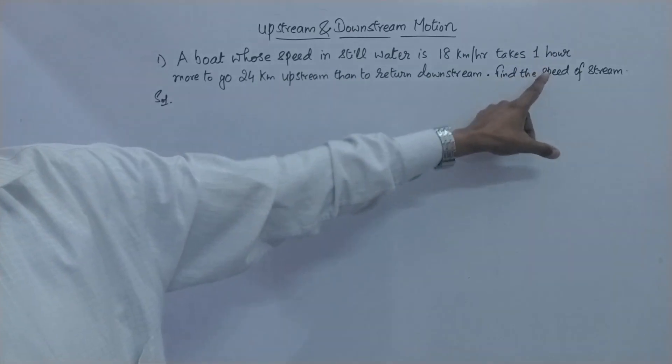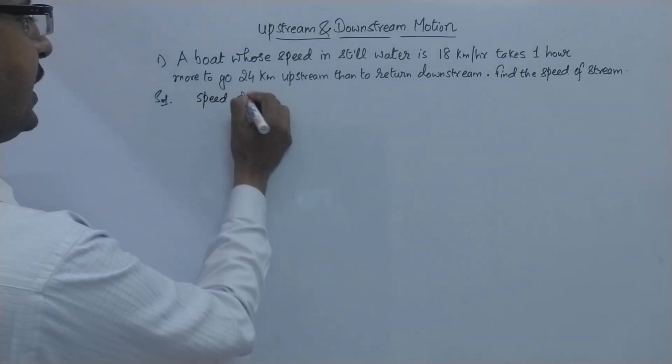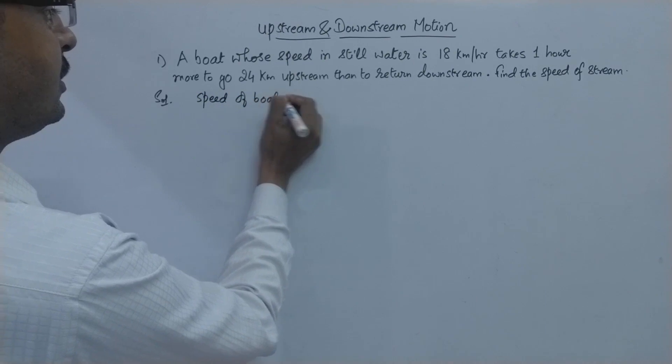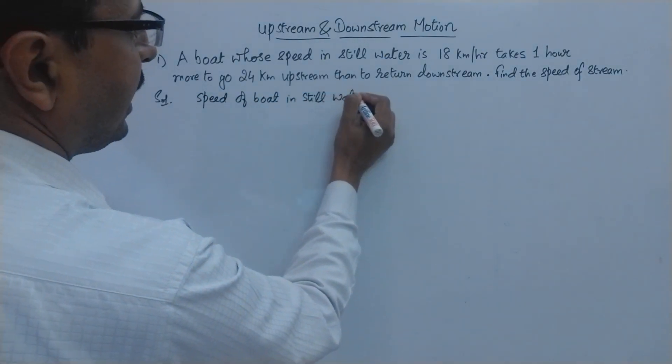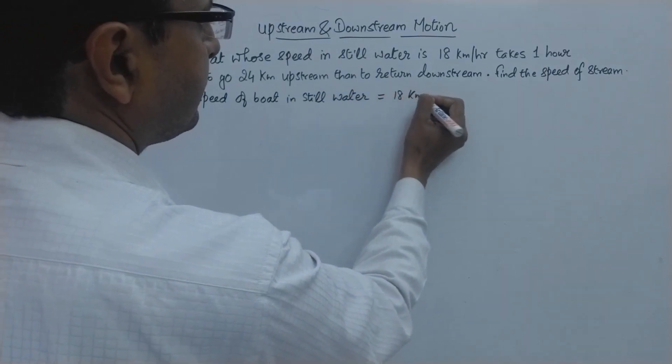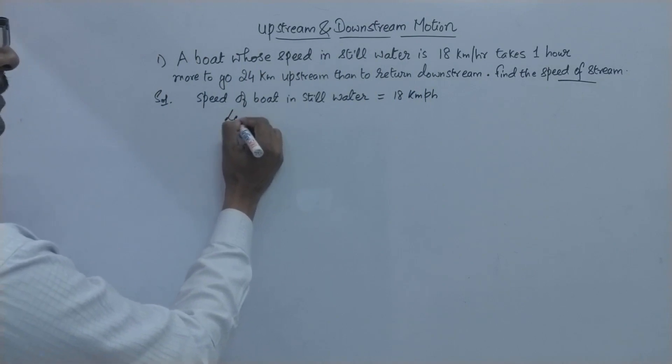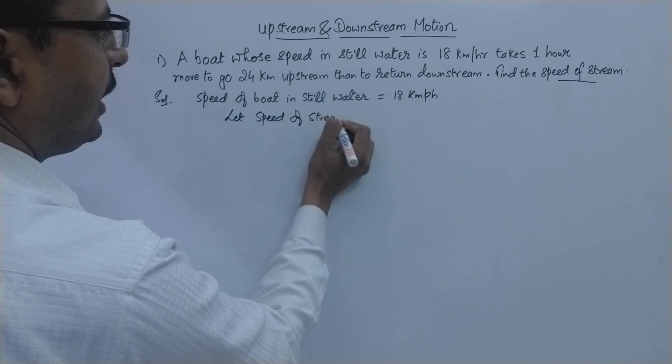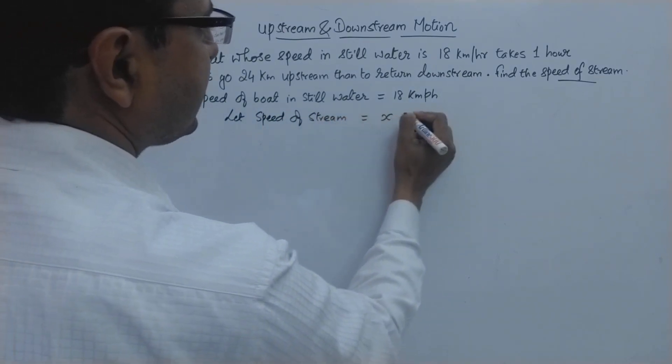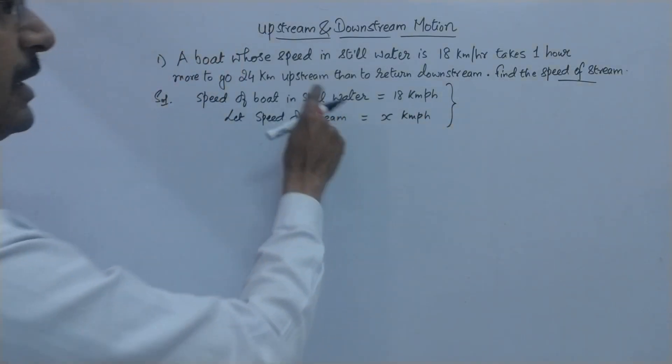So we need to find the speed of stream. Now what do we do in such cases? Speed of boat in still water, this is given as 18 kilometer per hour and we need to find the speed of stream. So let speed of stream, let us assume this as x kilometer per hour.